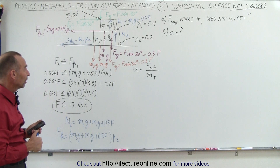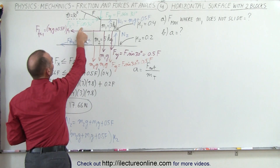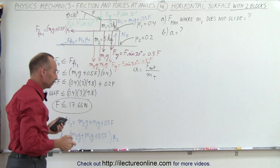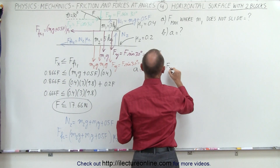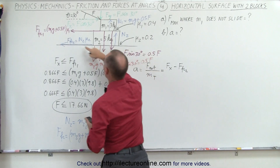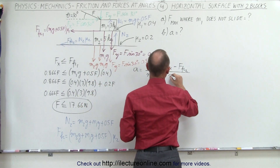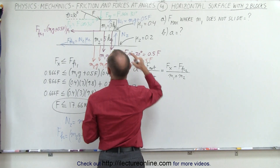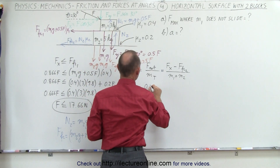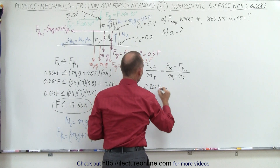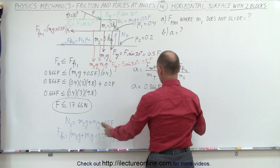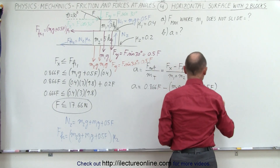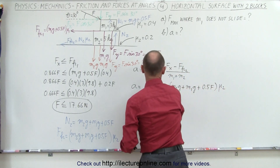Now we're ready to plug in the net force. The net force is the x-component of the applied force pushing to the right minus the friction force between m2 and the surface pushing in the opposite direction. So: a = (F_net) / (m1 + m2) = [Fx − F_friction2] / (m1 + m2) = [0.866F − (m2g + m1g + 0.5F) times mu_2] / (m1 + m2).